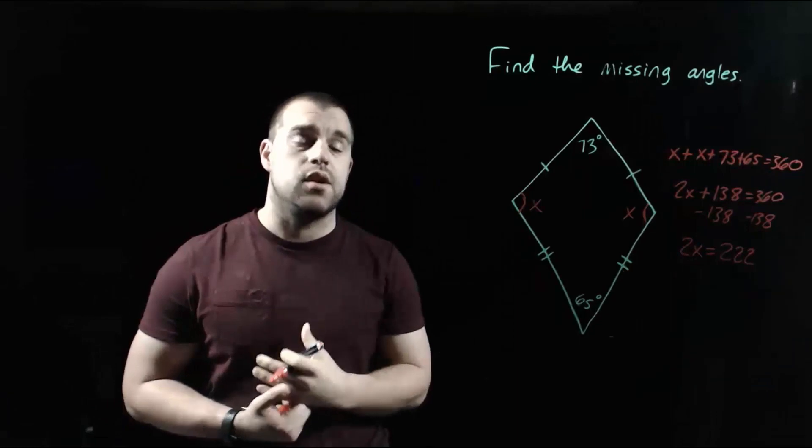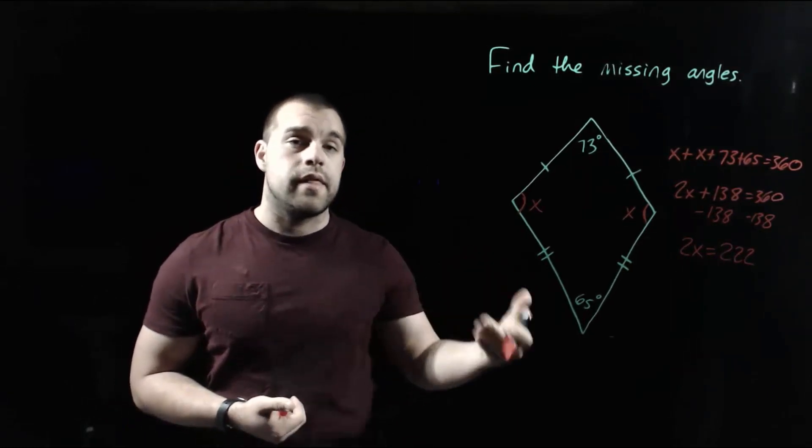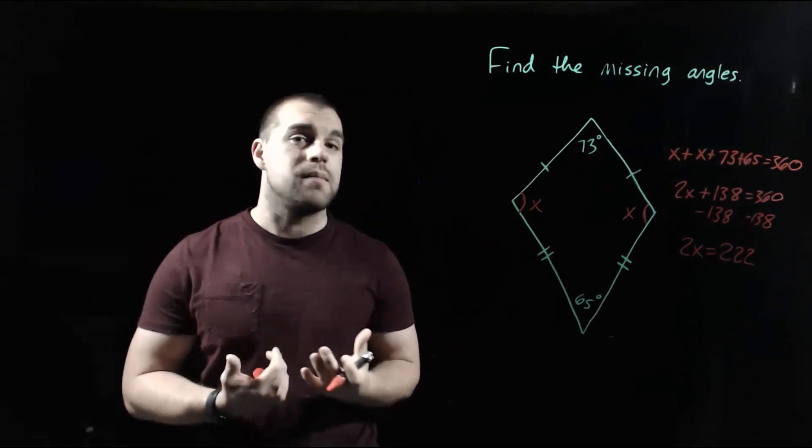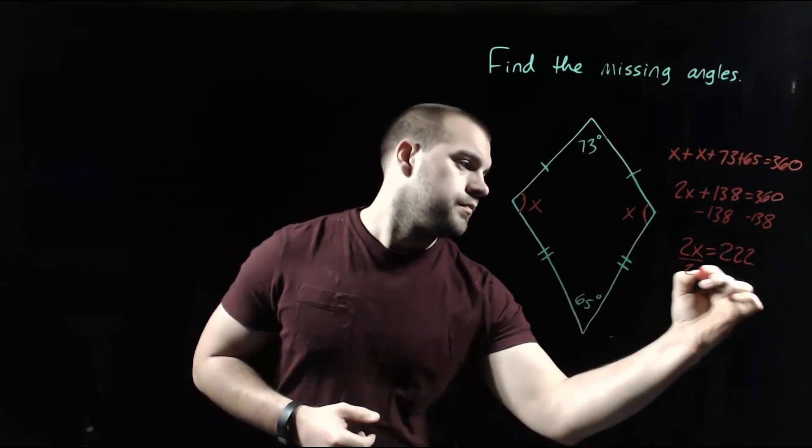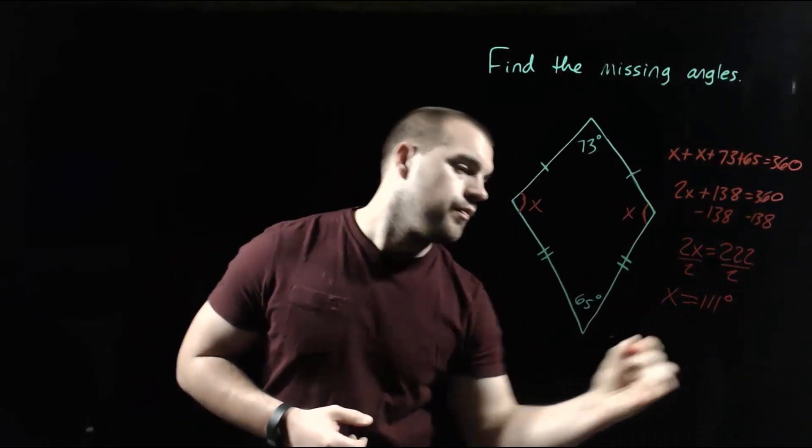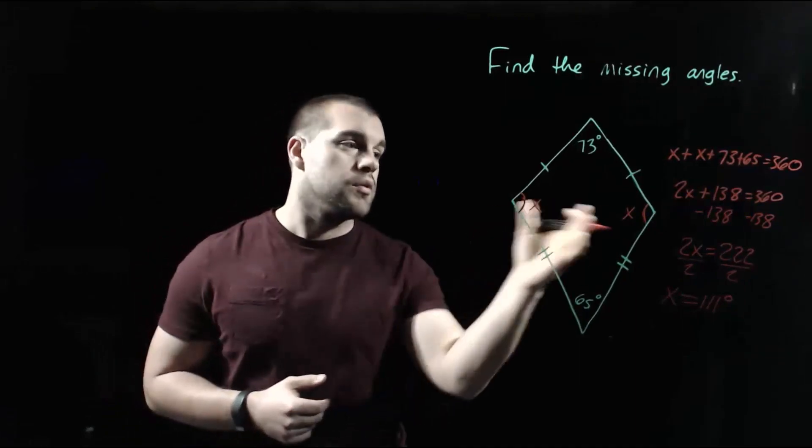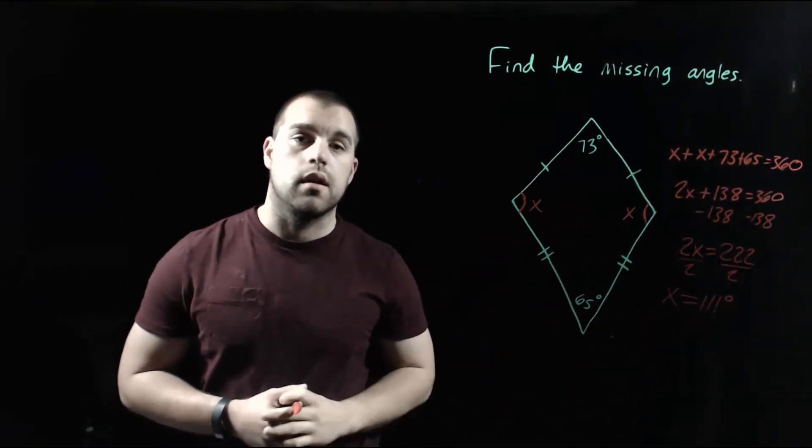So if we do that, we get 2x equals 222, and then our last step is going to be to divide both sides by 2. So each one of our missing angles within our kite is 111 degrees.